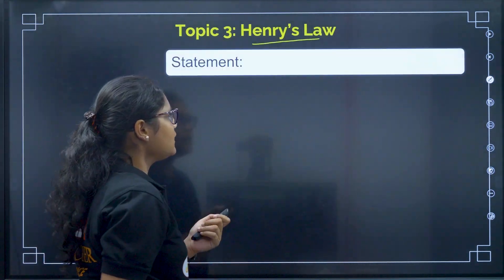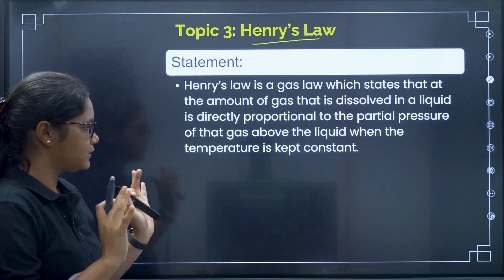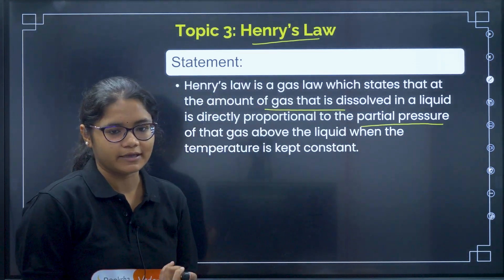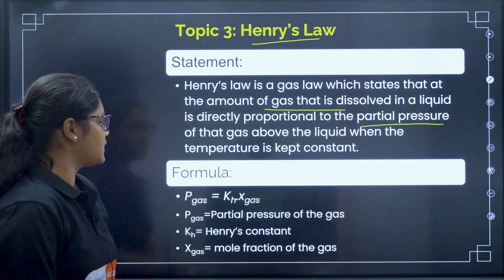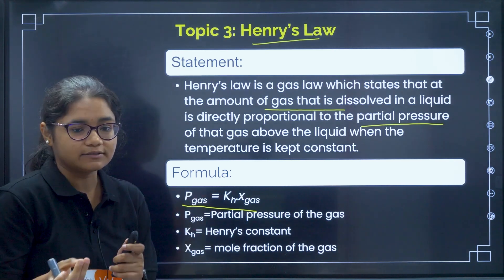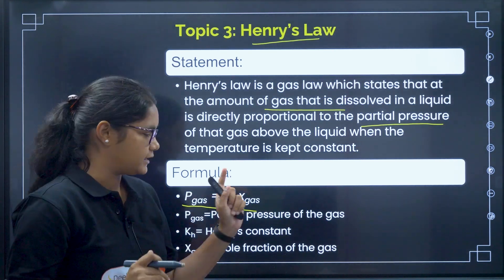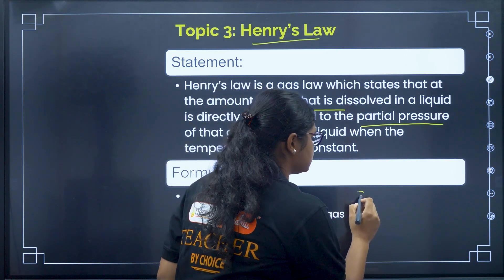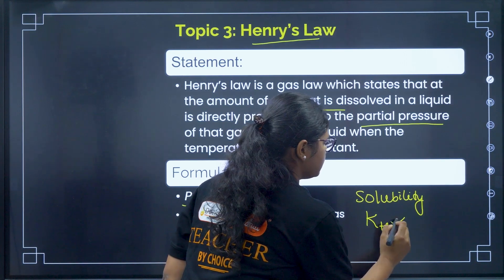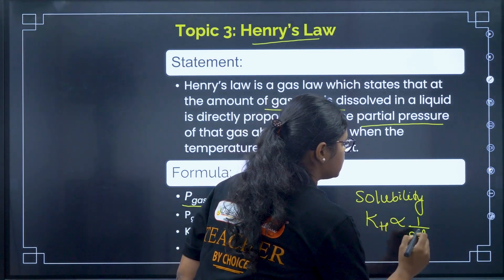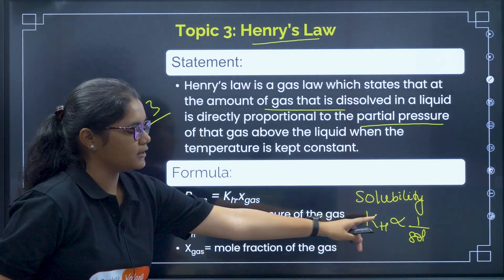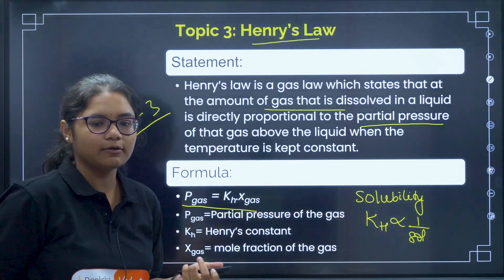Now Henry's law. The statement says the gas that will be dissolved is proportional to the partial pressure of the gas. The formula asked in numericals is: P of the gas equals Henry's constant (K_H) multiplied by mole fraction of the gas. Another question type is based on solubility: K_H is inversely proportional to solubility. Practice 2 to 3 numericals on this topic and one question about solubility, then you are done.